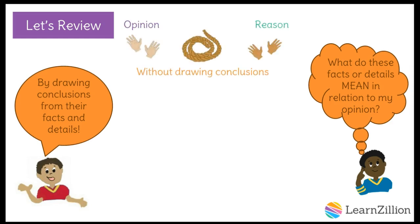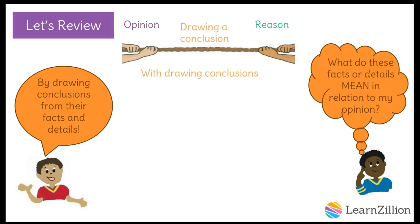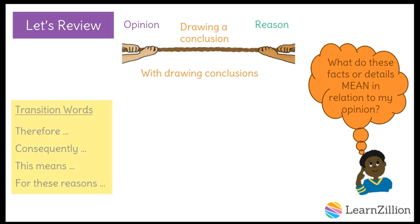Without drawing a conclusion, it's not clear to our reader how our opinion and reason are linked. By drawing conclusions, we clearly connect our opinion with our reason to make our argument stronger. In order to connect our facts or details with the conclusions that we come to, we can use transition words like therefore, consequently, this means, or for these reasons. These transition words work nicely for drawing conclusions because they show that one idea is connected to another.